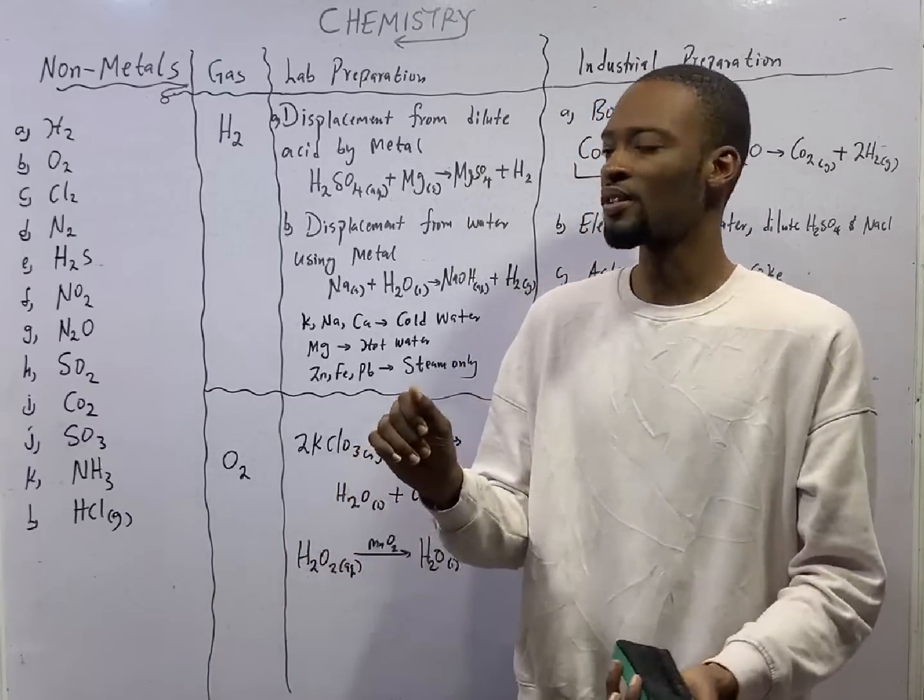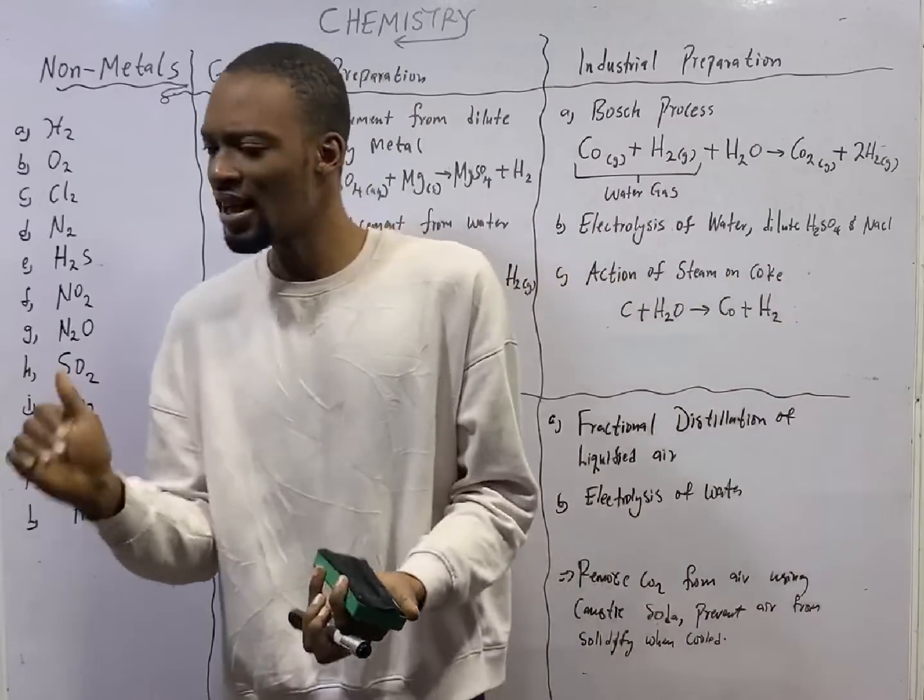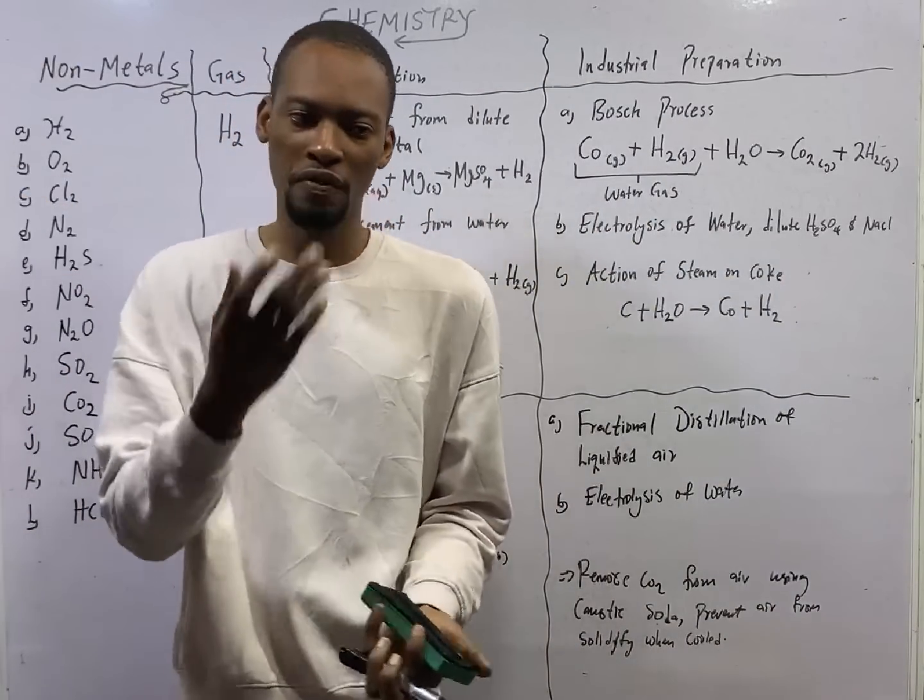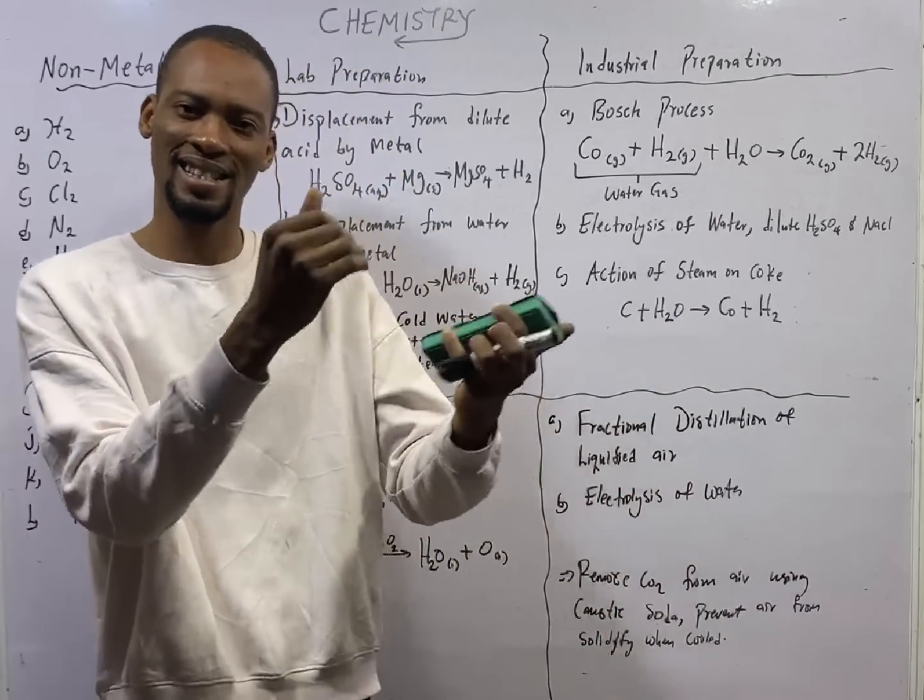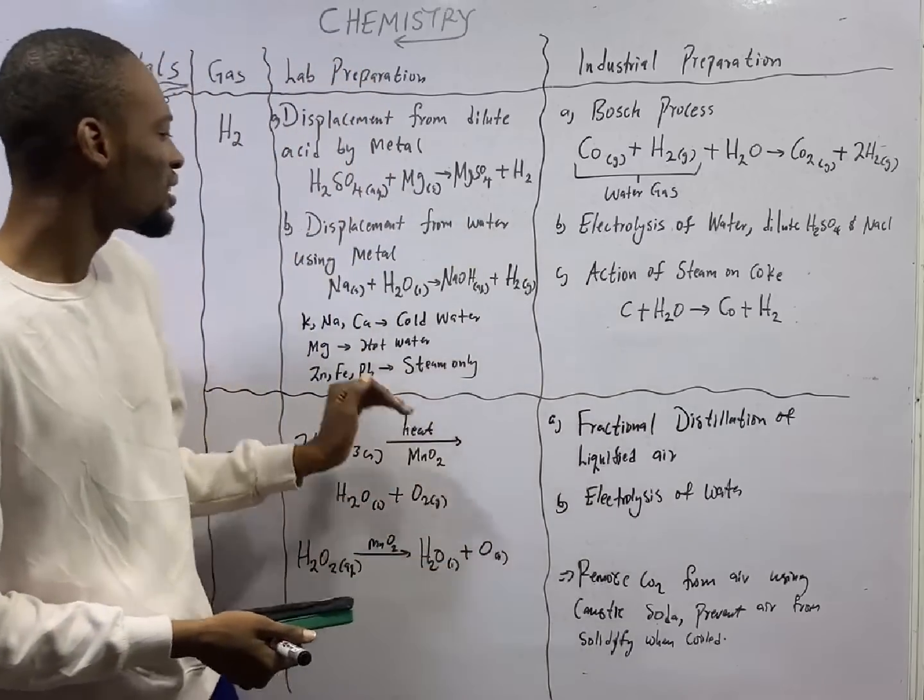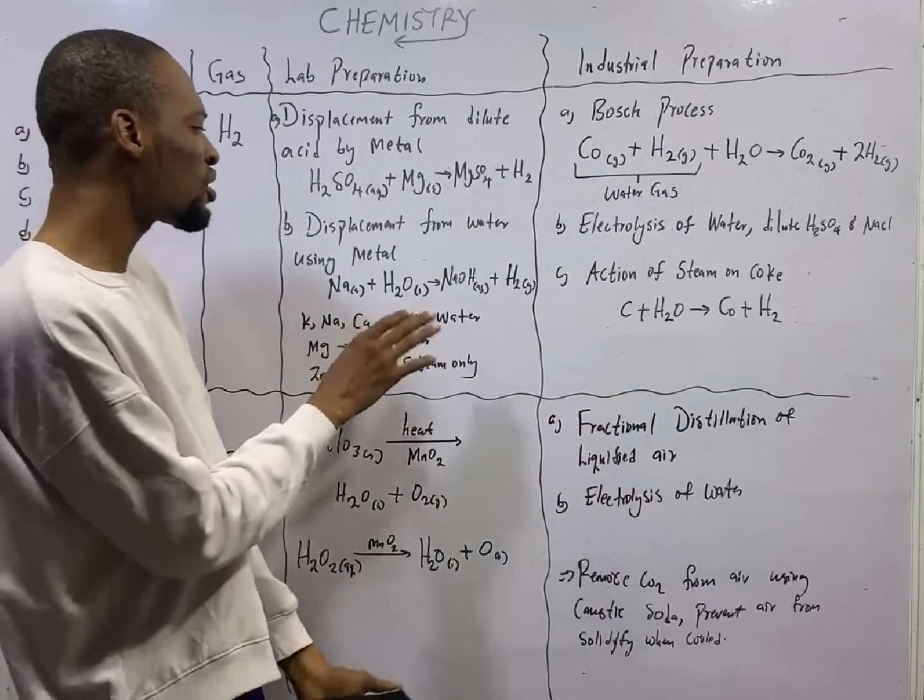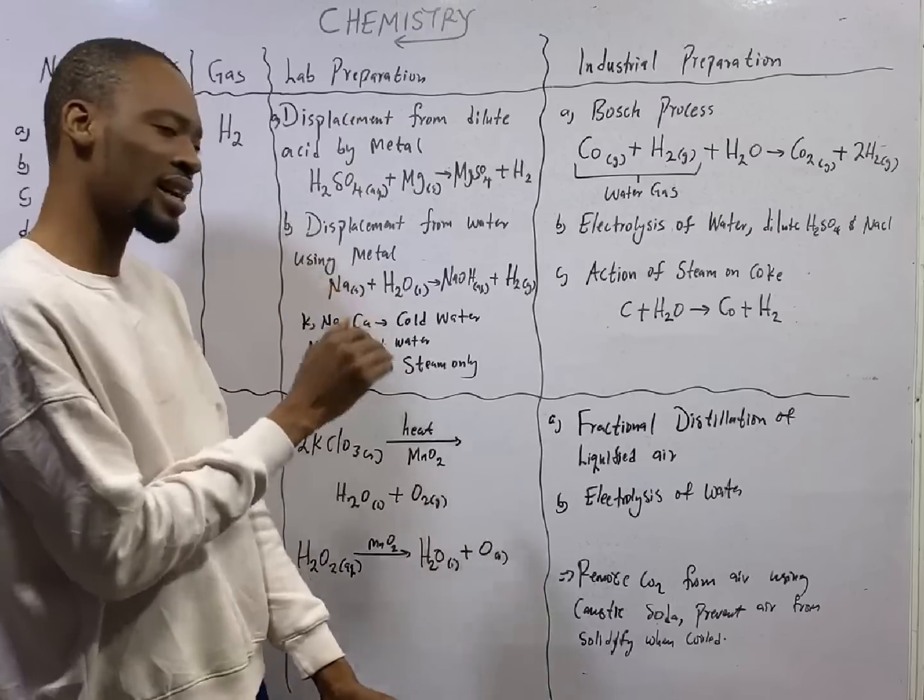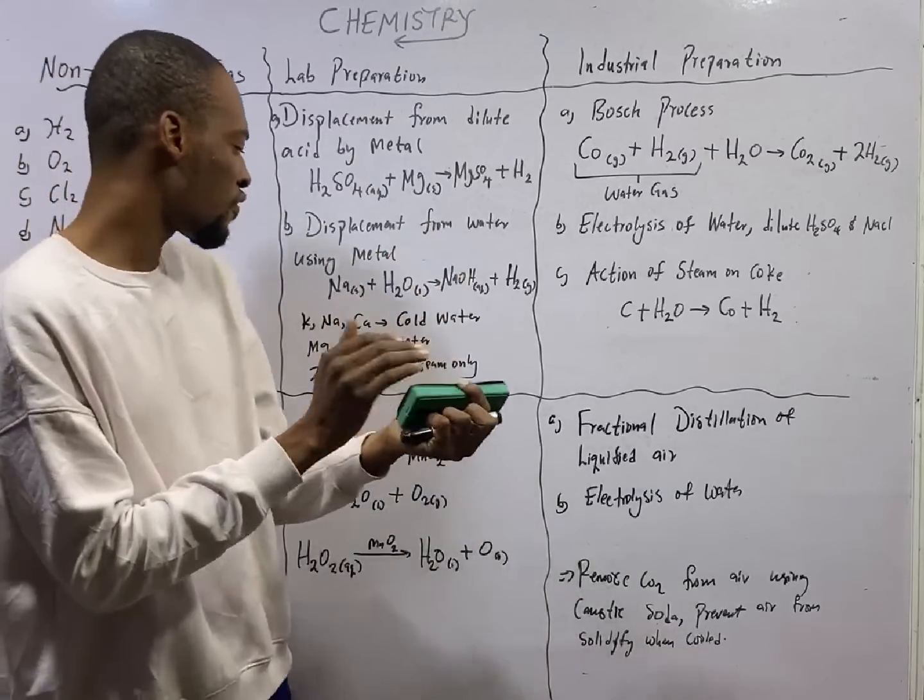Although when metals react with water, hydrogen gas is given off, not all the metals have the privilege of removing hydrogen from any water at all. There are levels to things. The elements in the electrochemical series that are higher up, for example potassium, calcium, magnesium, all these ones, they can liberate hydrogen from cold water. Sodium, potassium, and calcium, they can remove hydrogen from cold water.